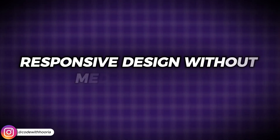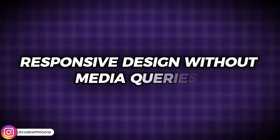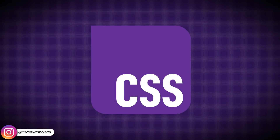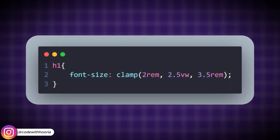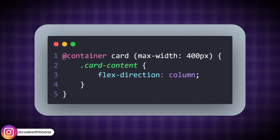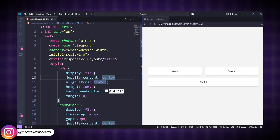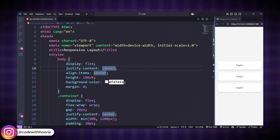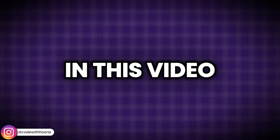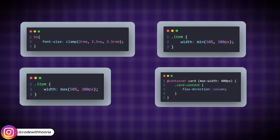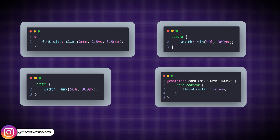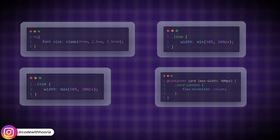Responsive design without media queries sounds impossible, right? But with modern CSS techniques like clamp, min, max, and container queries, you can create layouts that automatically adjust without a single media query. In this video, I will show you how to use these CSS properties to make your website look perfect on any screen size.